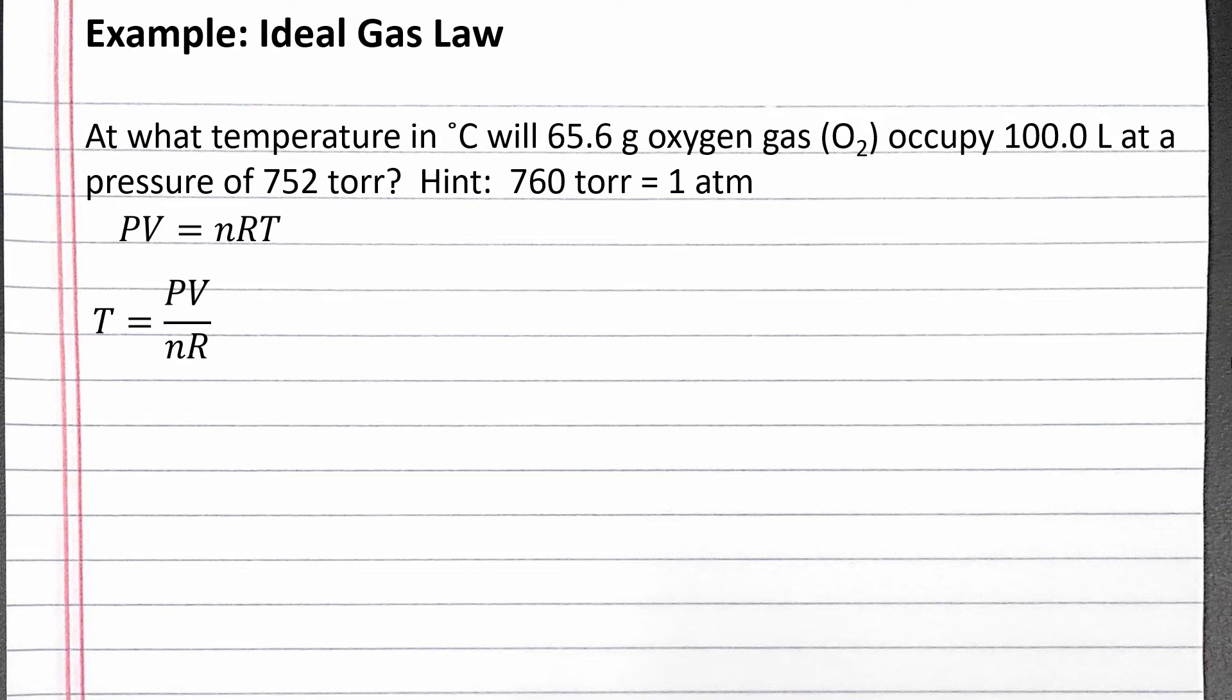In this equation, pressure needs to be in atmospheres, so we use dimensional analysis to convert from 752 torr to atmospheres using the conversion factor given in the problem. Completing the calculation, we get 0.989 atmospheres.